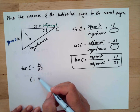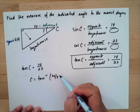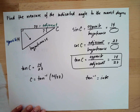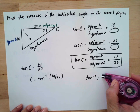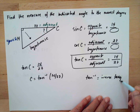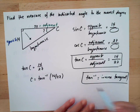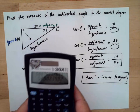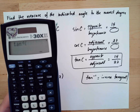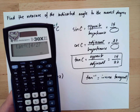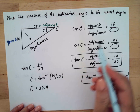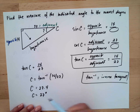Then we will do the inverse of this — tangent to the negative one, which is the inverse tangent. Using the calculator, press second for inverse, then tan, then 14 divided by 27. This will be equal to 27.4, and rounded to the nearest degree, that is 27 degrees.